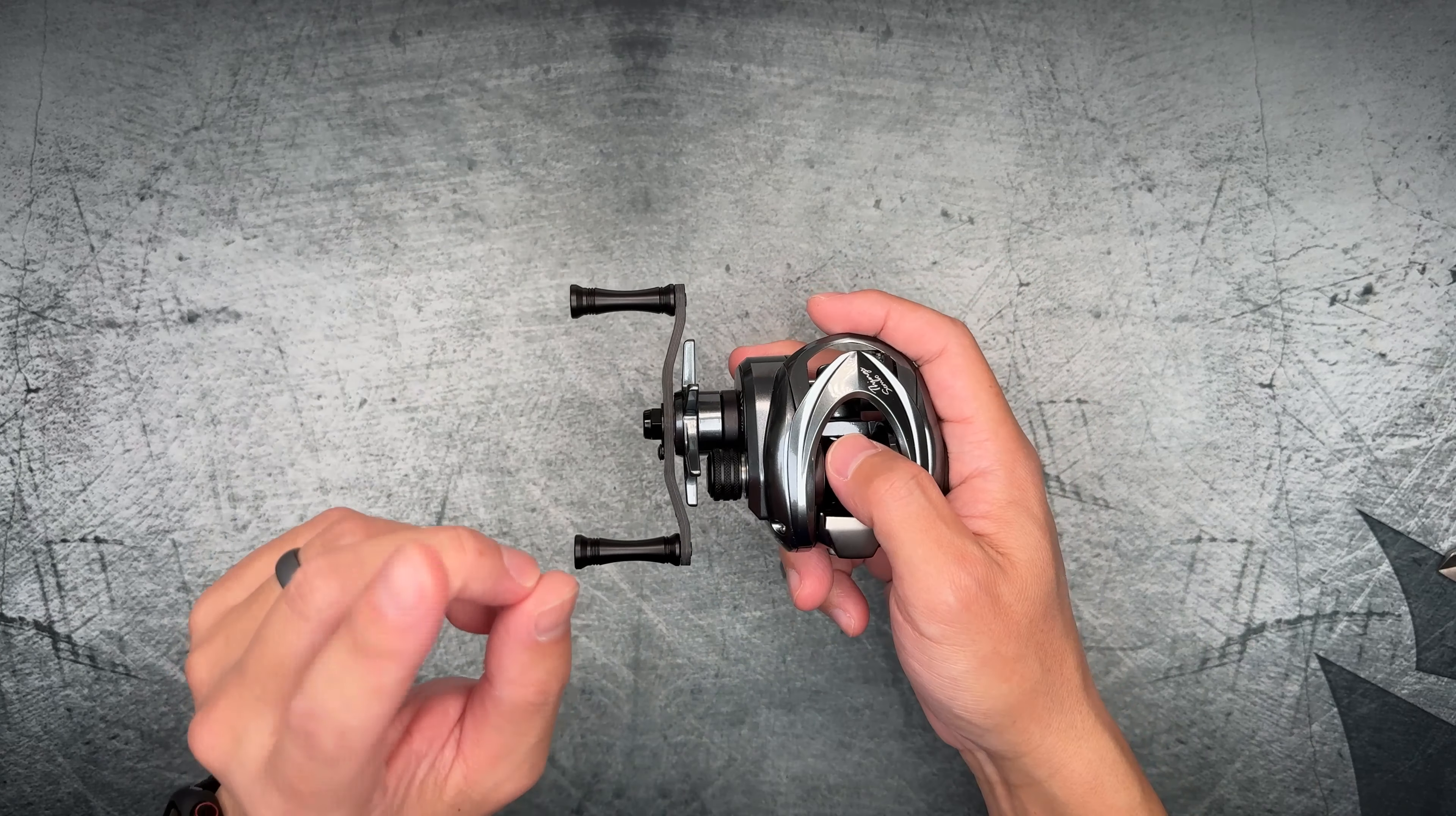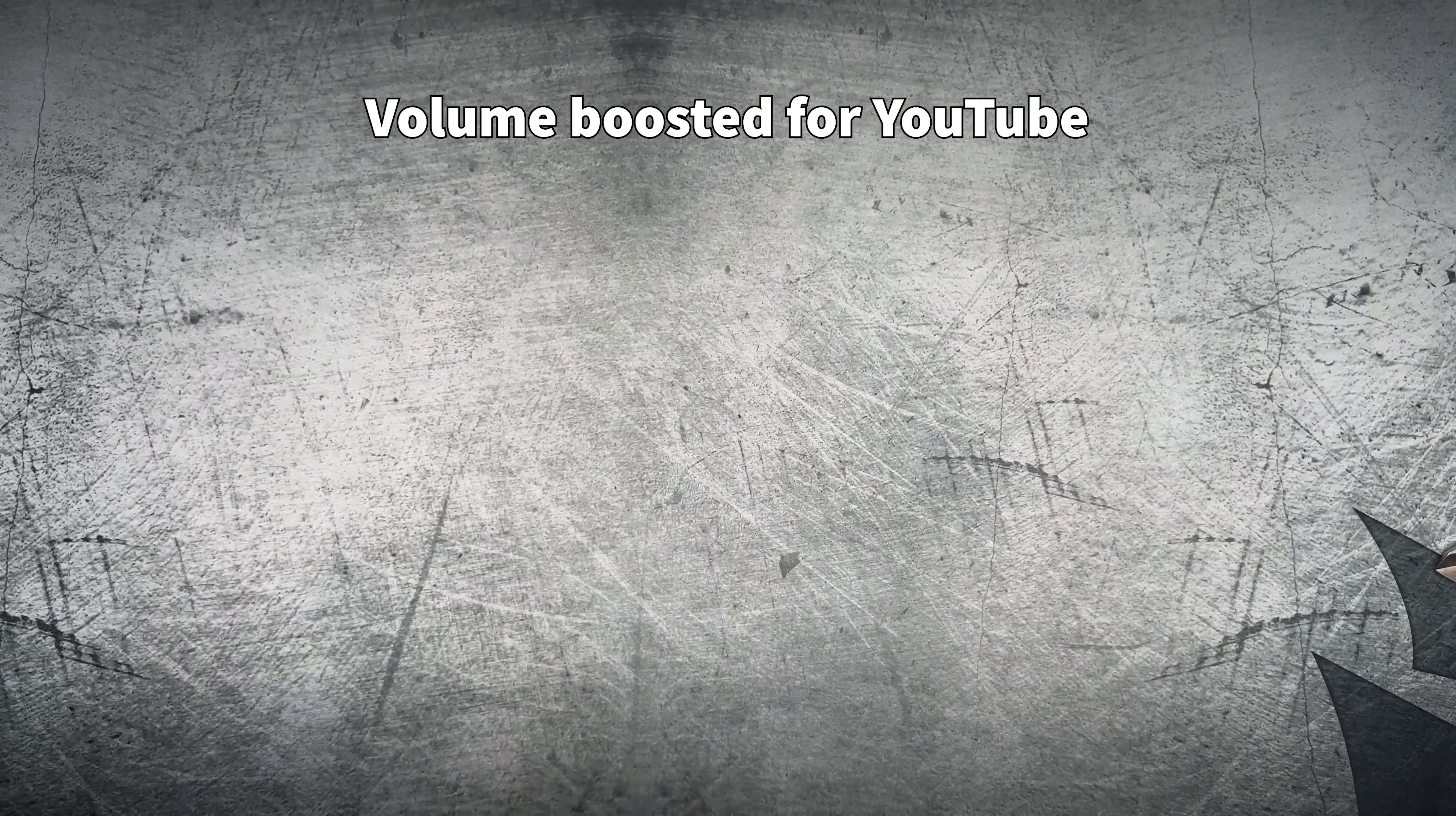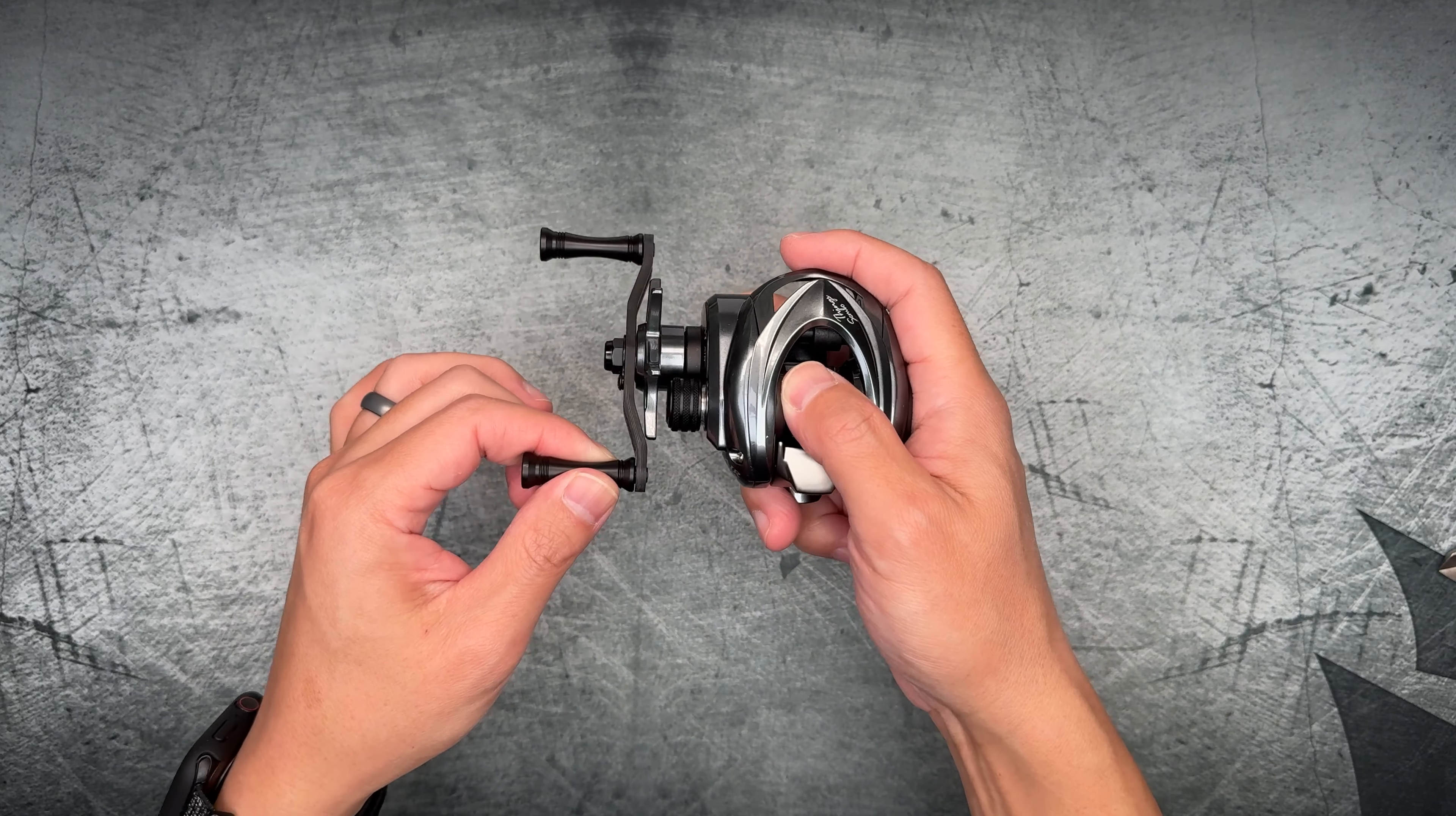Actually let's look at the specs first. All right, so what we've got is the model name, it's the 117 Air. It is a gear ratio of 7.8 to 1, drag strength of around 4 kilograms, 11 plus 1 ball bearings. Their CMPT is about 68 which I don't think that's true but we'll calculate that later. They're saying that you can get about 115 meters of 0.6, 95 meters of 0.8, and 75 meters of 1.0 line.